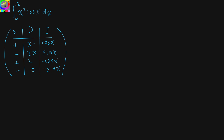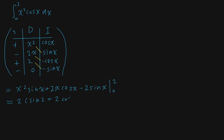Taking the products of the diagonals: x² sin(x) plus 2x cos(x) minus 2 sin(x), evaluated from x equals 0 to 2. When you simplify this, you get 2 sin(2) plus 2 cos(2). These are in radians, as required for calculus. That's the answer.